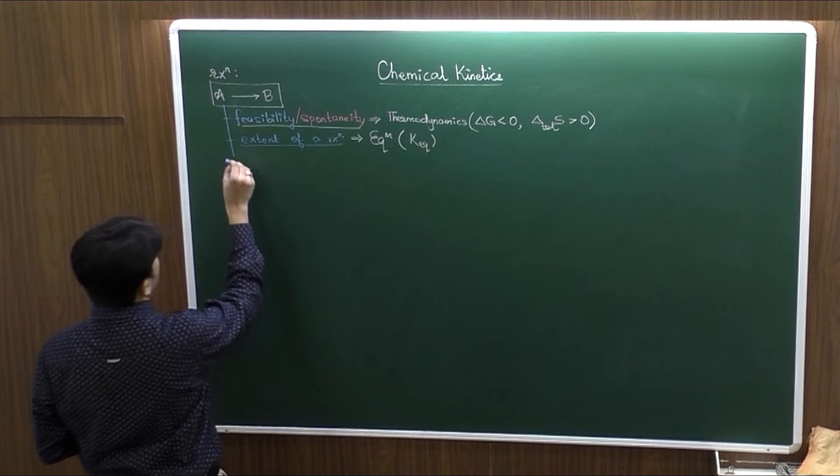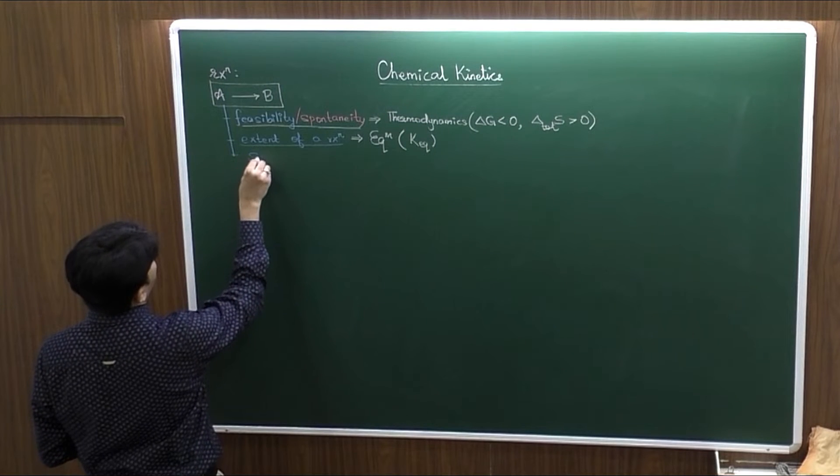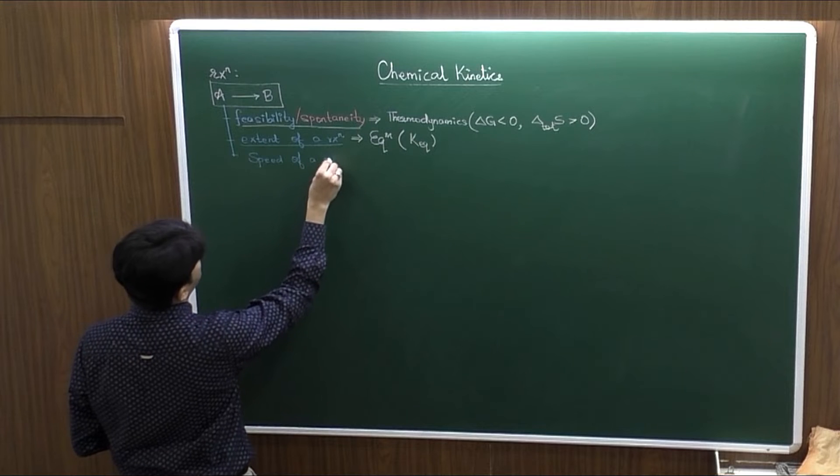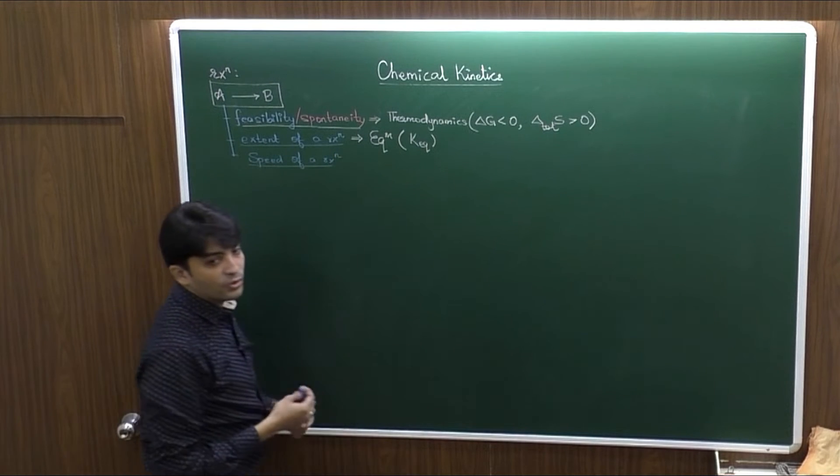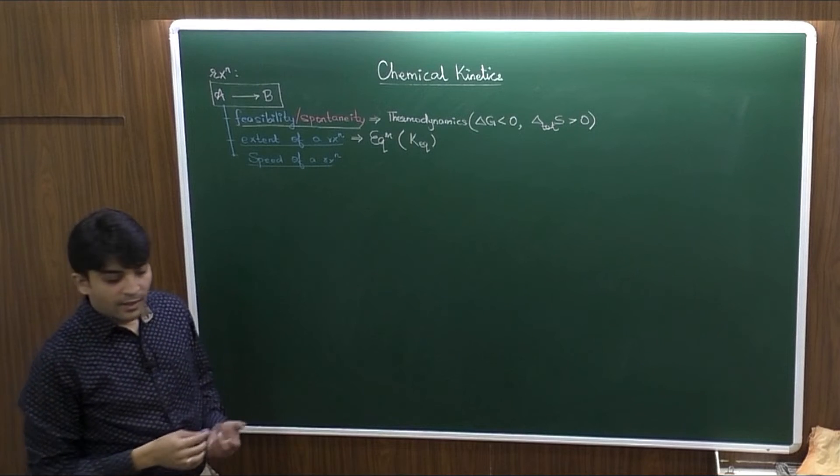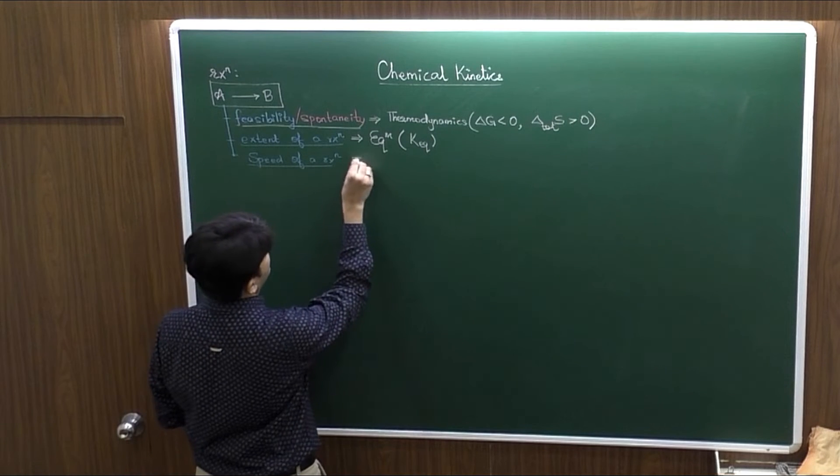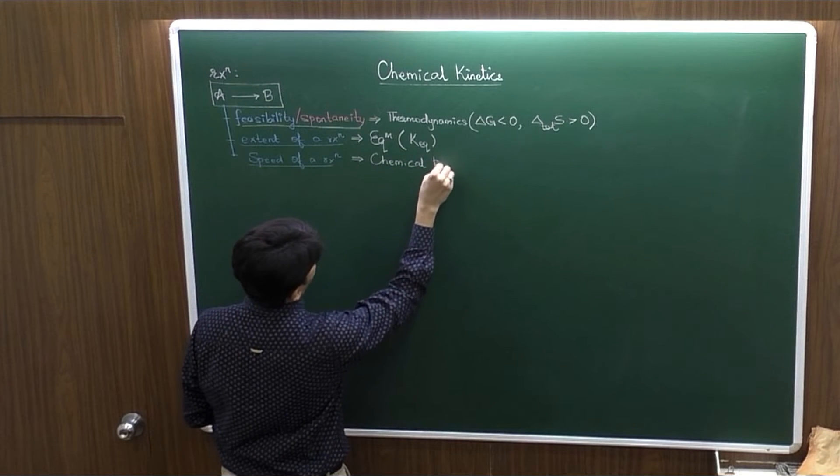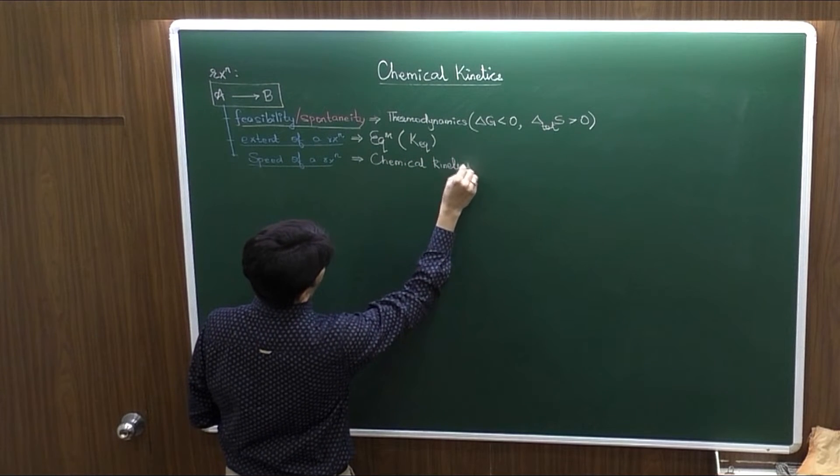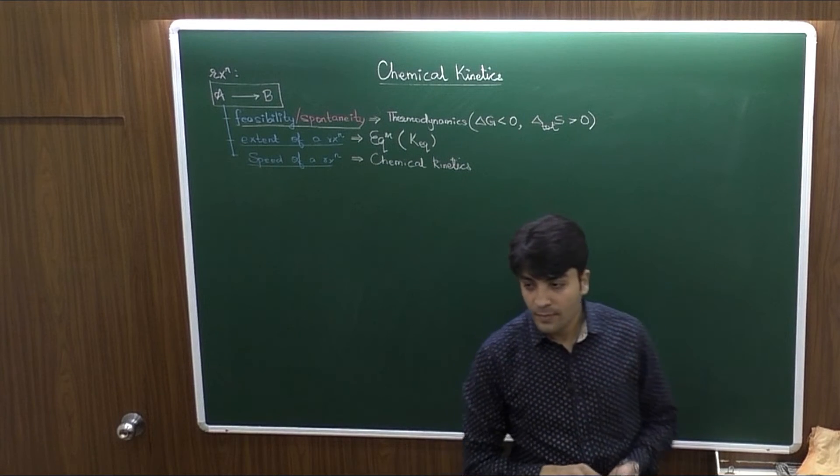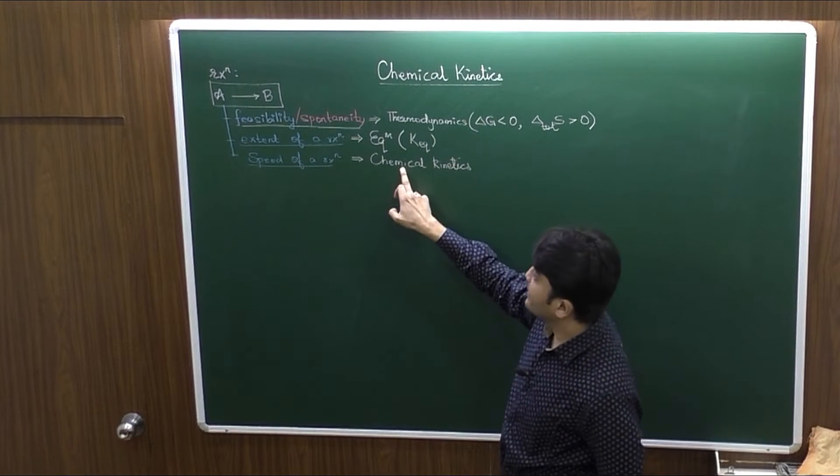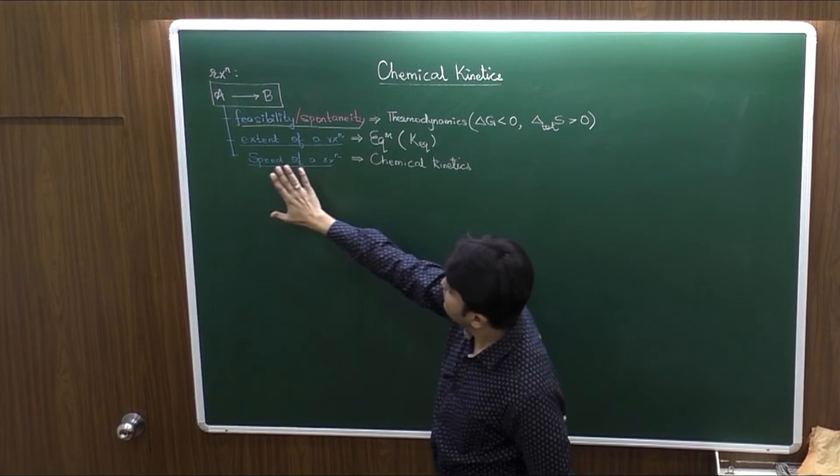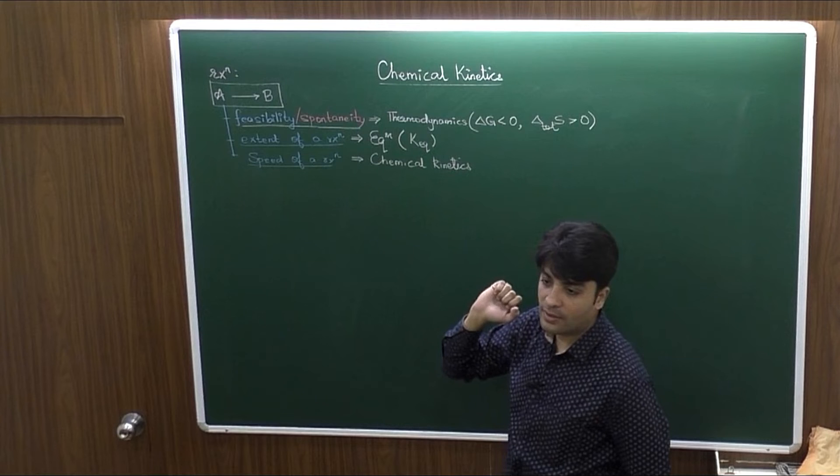The third aspect for a chemical reaction is the speed of a reaction. How fast or slow the reaction takes place. Now, that is understood by this branch of chemistry which is called chemical kinetics.